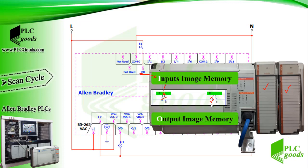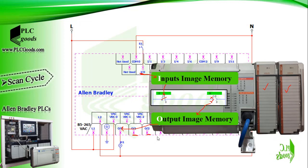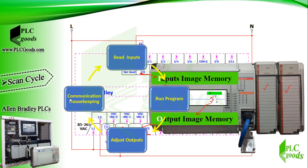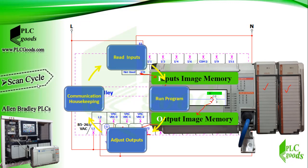During program execution, the processor does not change its real outputs. Instead, it updates the output image memory based on the solution of the user logic program. When the PLC processor reaches the end of the user program, it activates or deactivates all its real outputs according to the output image memory. After this, the PLC does housekeeping and communication tasks, then reads all input statuses again. This cycle is called the scan cycle, which takes about five to ten milliseconds depending on the processor type and program size.